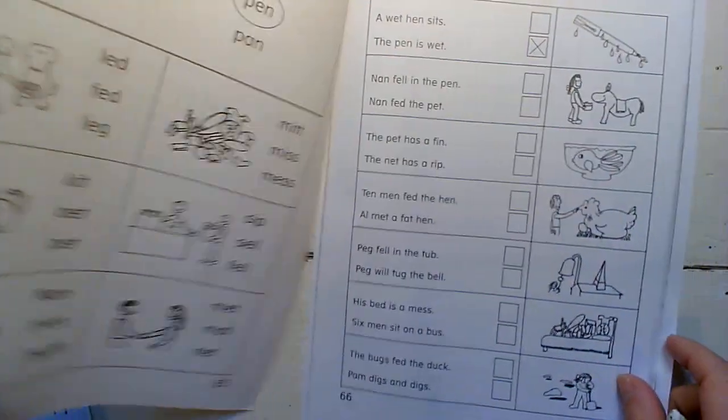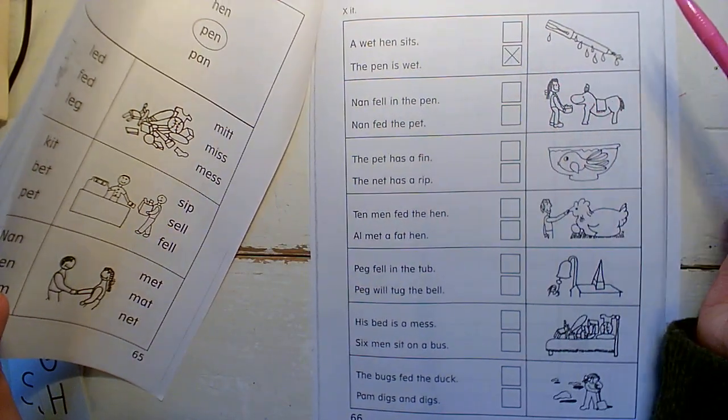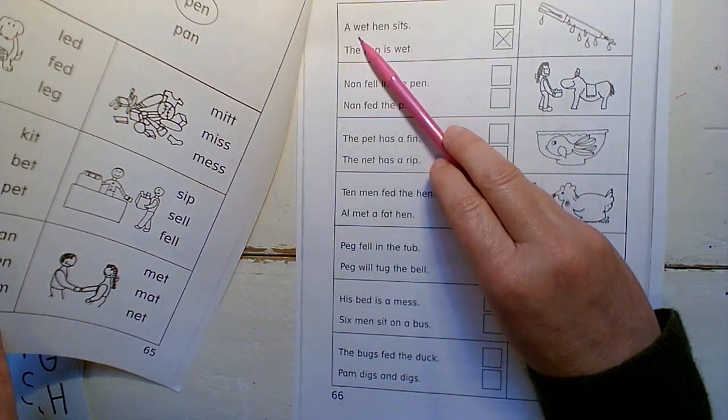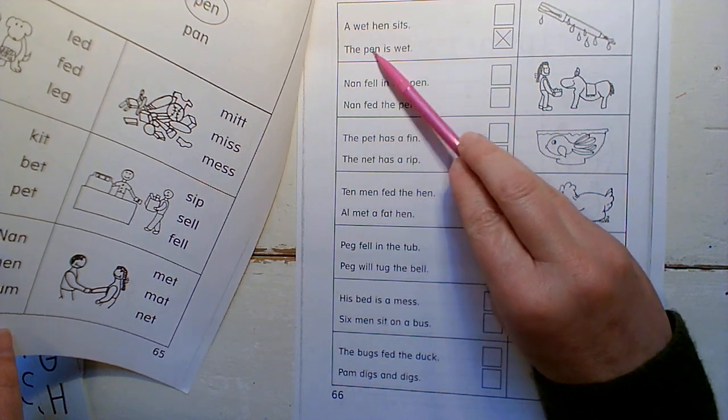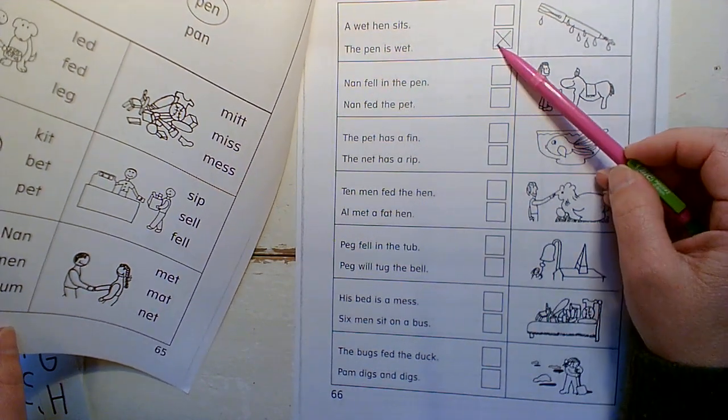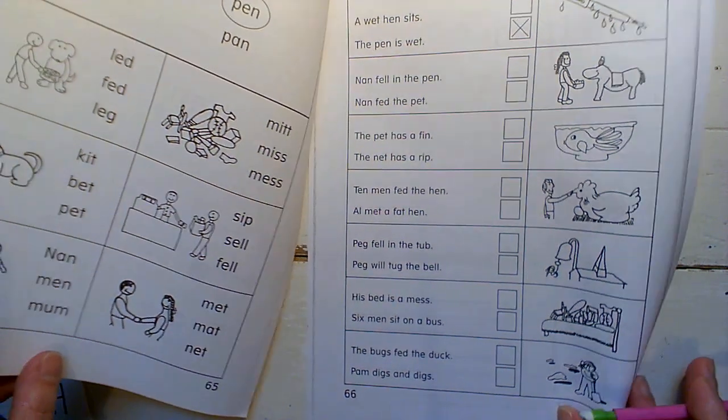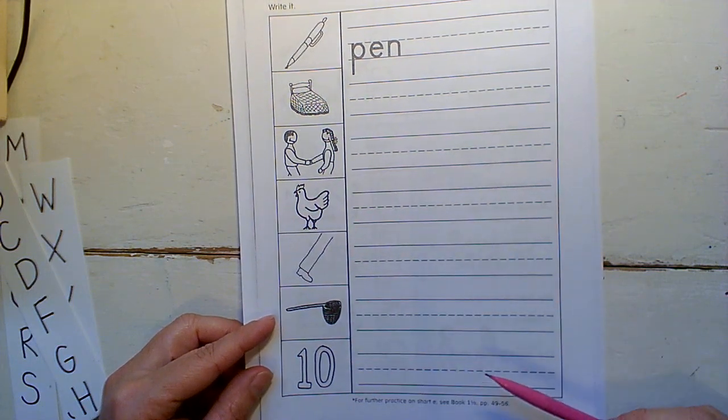Okay. Here, these are the tricky ones. We have to read the sentence and put an X in the box next to the one that the picture is. Okay. So this one says a wet hen sits or the pen is wet. And they put an X on this one because it shows a wet pen. So put an X by the one that is true about the picture. And then over here, write the word. Okay. You've got this.